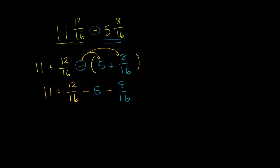And then I like to do the whole number part separately and then the fractional part separately. So let's do the whole number parts. We have 11 minus 5—that's the whole number part—and then we have plus 12 sixteenths.